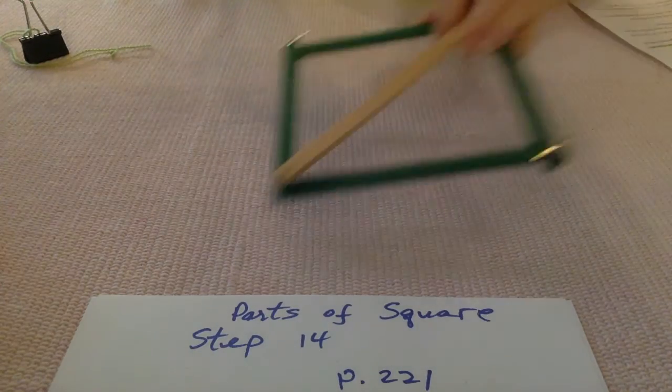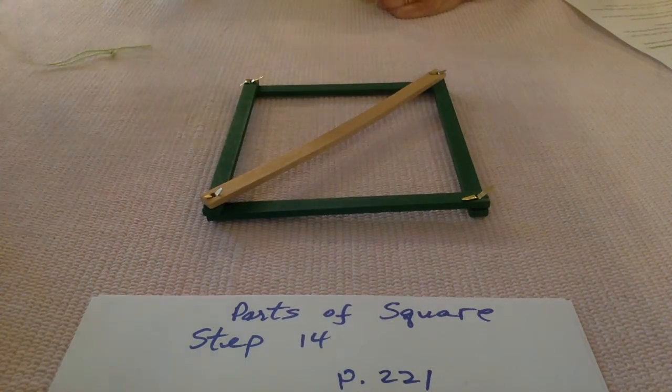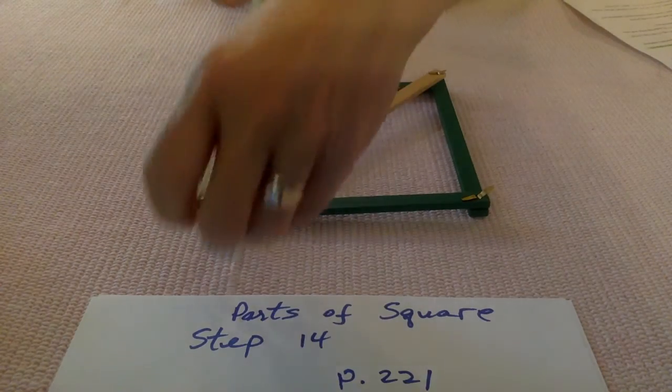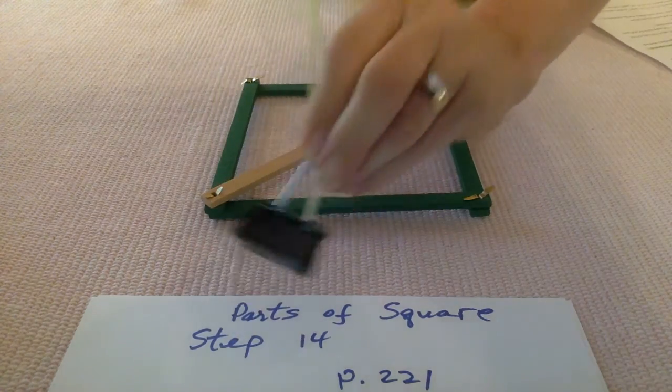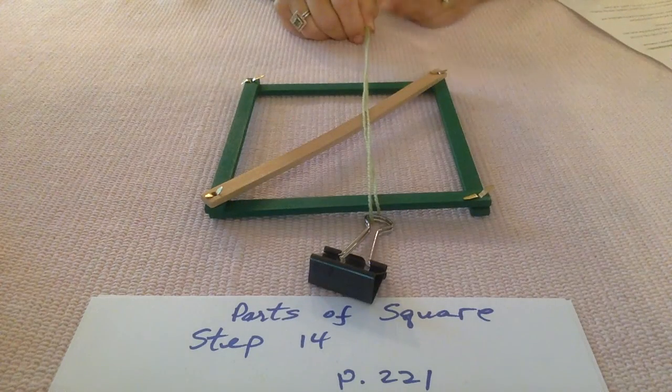And finally, for a square, like the rectangle, the altitudes will either be on the side or interior.